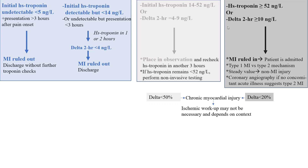The better way is to look at the percentage delta. In the gray zone — the lower numbers — a 50 percent delta is significant. In the higher numbers over 52, a 20 percent delta is significant. If those numbers are present but the delta is less than 50 or 20 percent respectively, it's not an MI — it's a chronic myocardial injury. You may or may not need to perform ischemic workup depending on context.